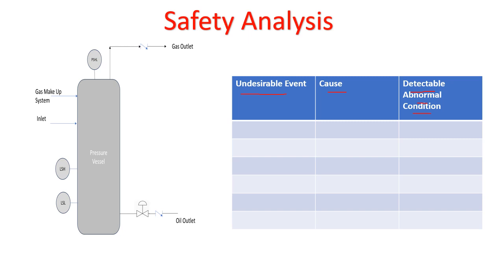Besides over-pressure, there may also be under-pressure, high level, and low level situations as other undesirable events for this vessel. The next lecture will cover all these different undesirable events in detail, including their causes and how to detect abnormal conditions. The key takeaways from this lecture are: what API 14C is, its different contents, what a safety flow chart is, and what safety analysis involves.